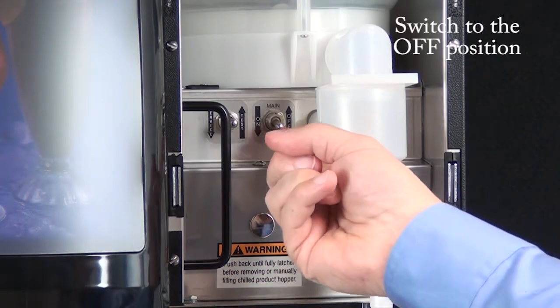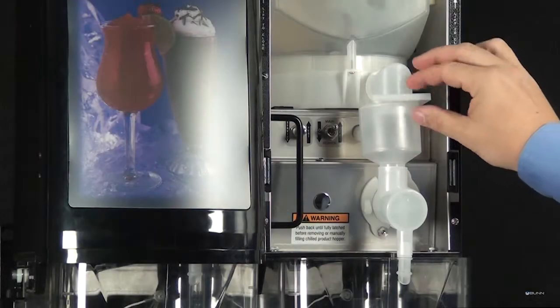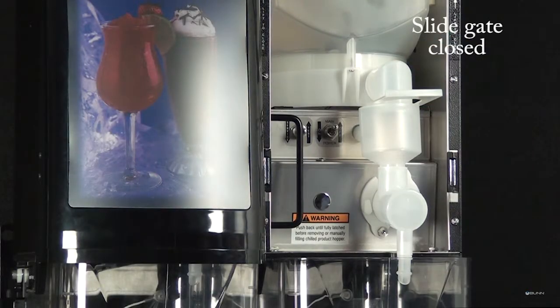Place the power switch in the off position. Slide the gate shut on the powder hopper and remove the hopper.